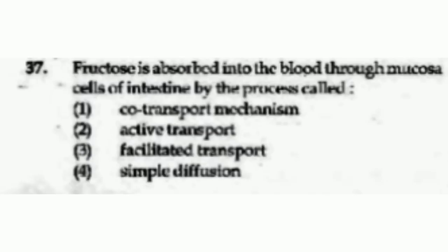Fructose is absorbed into the blood through mucosa cells of the intestine by the process of — options are co-transport mechanism, active transport, facilitated transport, or simple diffusion. The correct answer is option number 3, Facilitated transport.